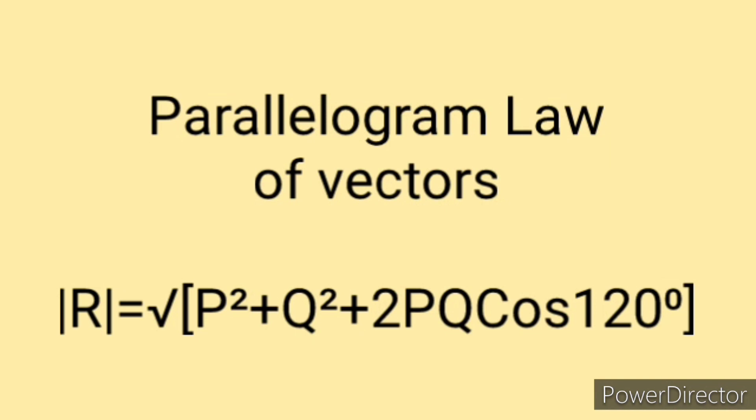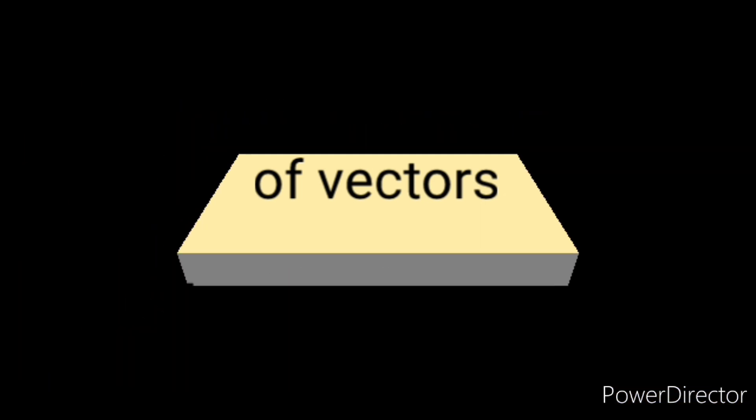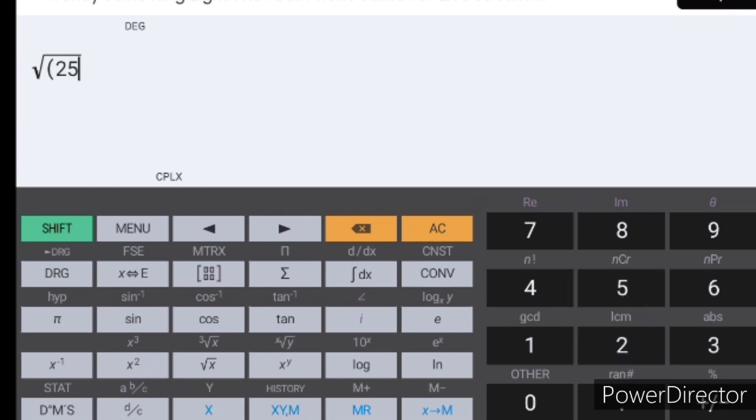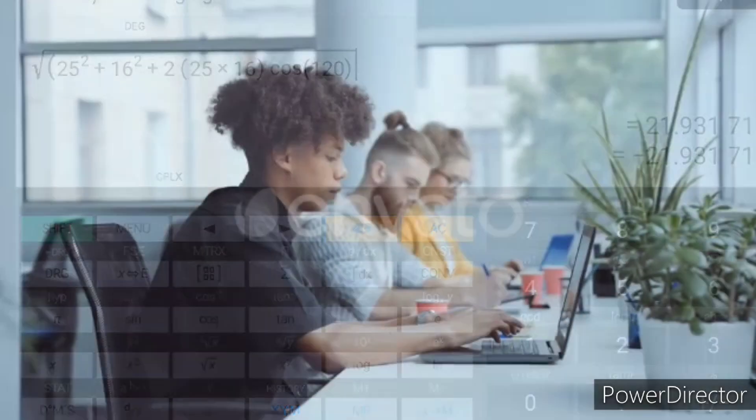Using the parallelogram law of vectors, we apply this formula: the square root of P squared plus Q squared plus 2PQ cos theta. The angle theta is 120 degrees. When you key in your values: square root of 25 squared plus 16 squared plus 2 times 25 times 16 times cos 120 degrees, our answer will be 21.93.